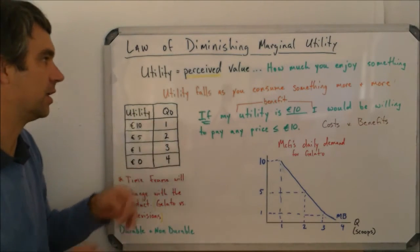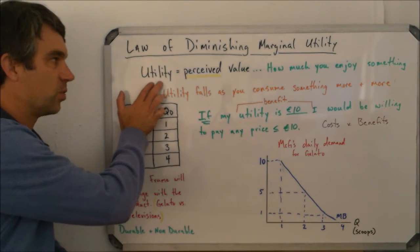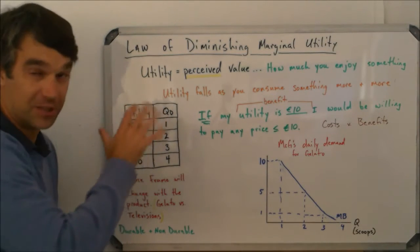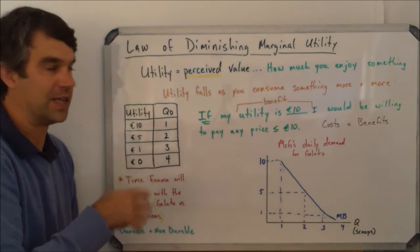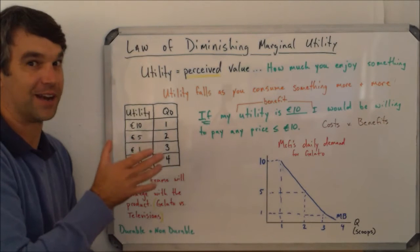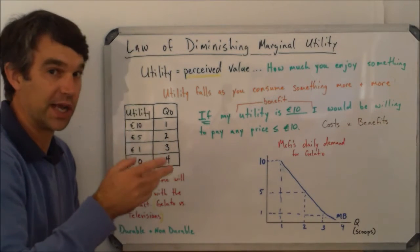So the law of diminishing marginal utility, we first have to understand this word utility. Utility gets misused. For example, a sports utility vehicle, an SUV, is probably not a very great use of the term, but we'll let it go.